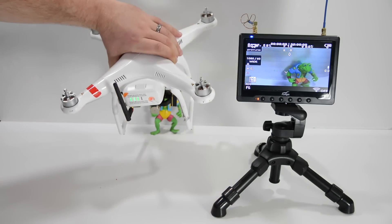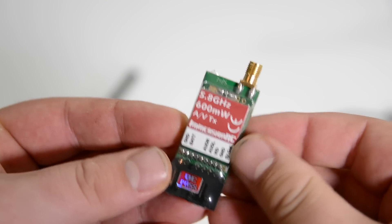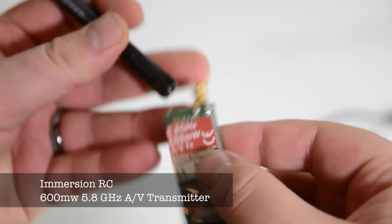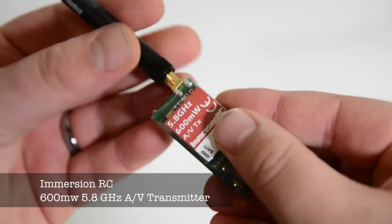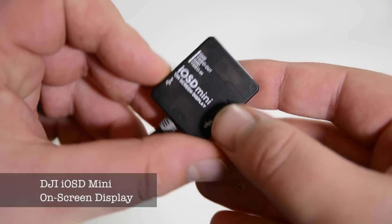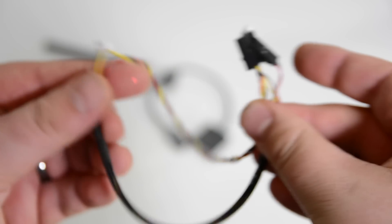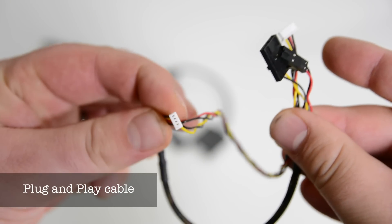So the first things that we'll need, we'll need the actual transmitter itself and like I said this is the Immersion RC, this is 600 milliwatts and then we have the iosd mini and now we have a plug and play cable and this plug and play cable makes things really easy.